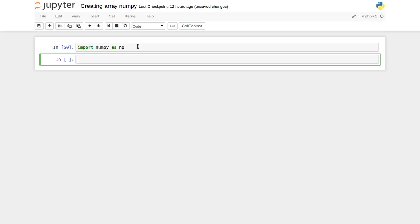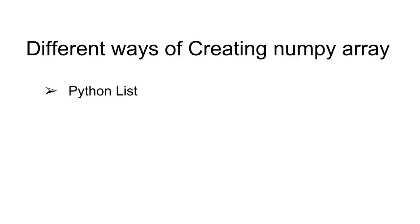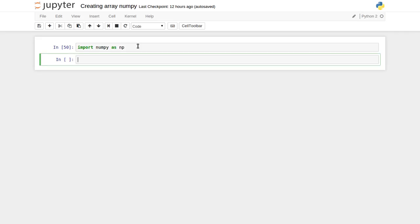Now let us see the different ways we can create arrays inside NumPy library. The first way is using a Python list. What we'll do is create a Python list data structure and provide that list as an argument to the function which creates the NumPy array.